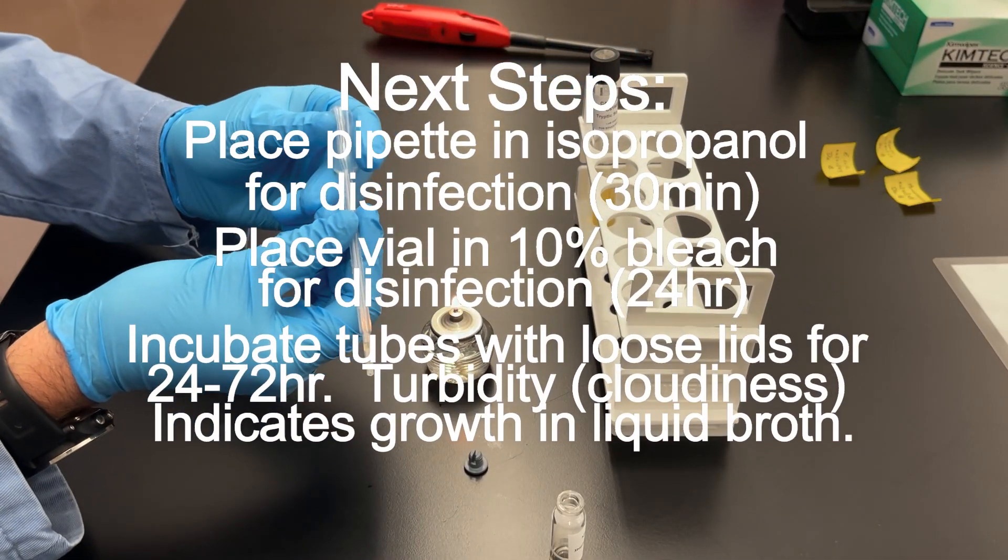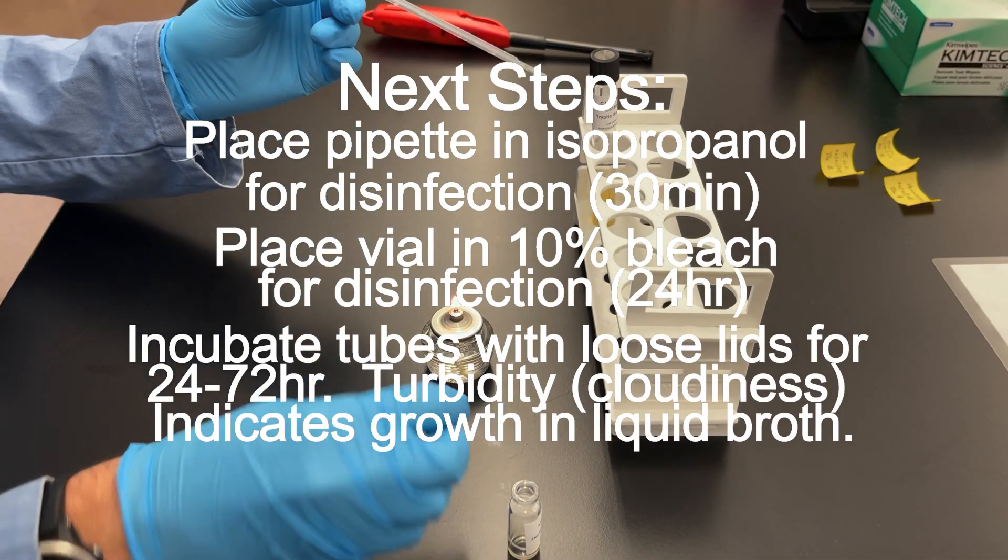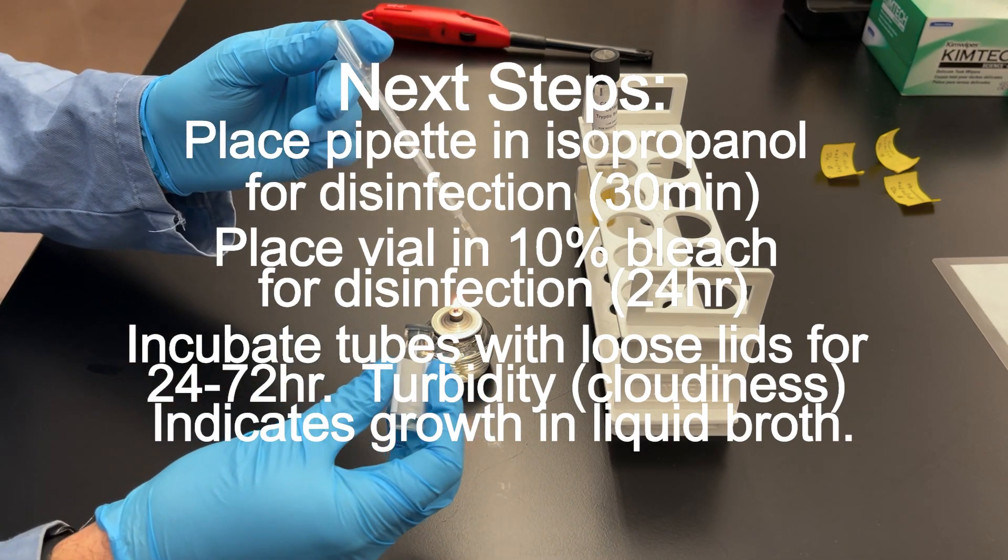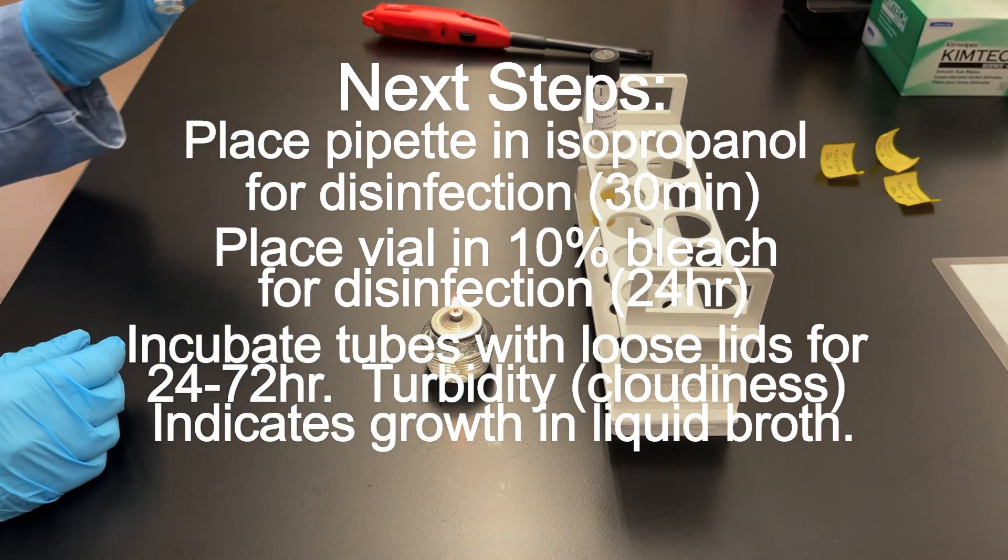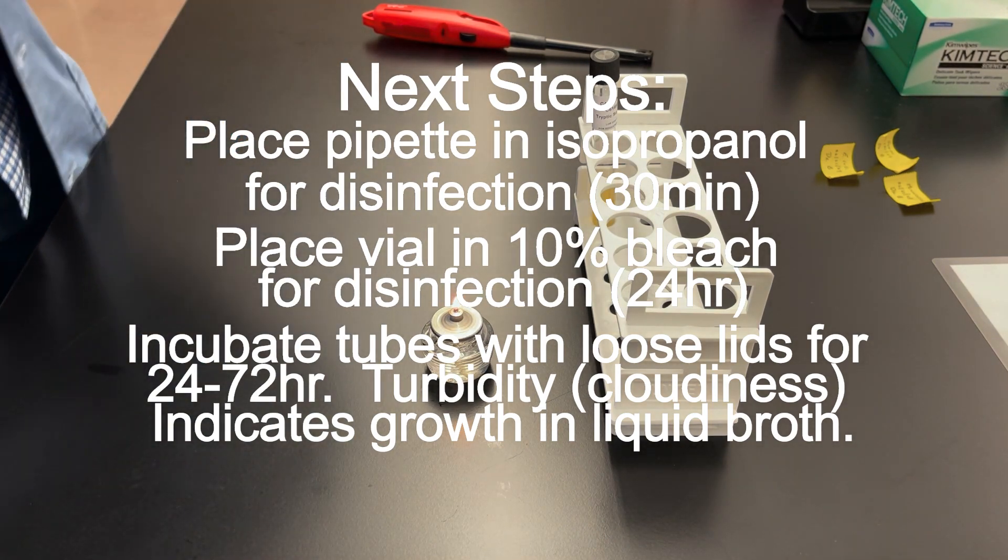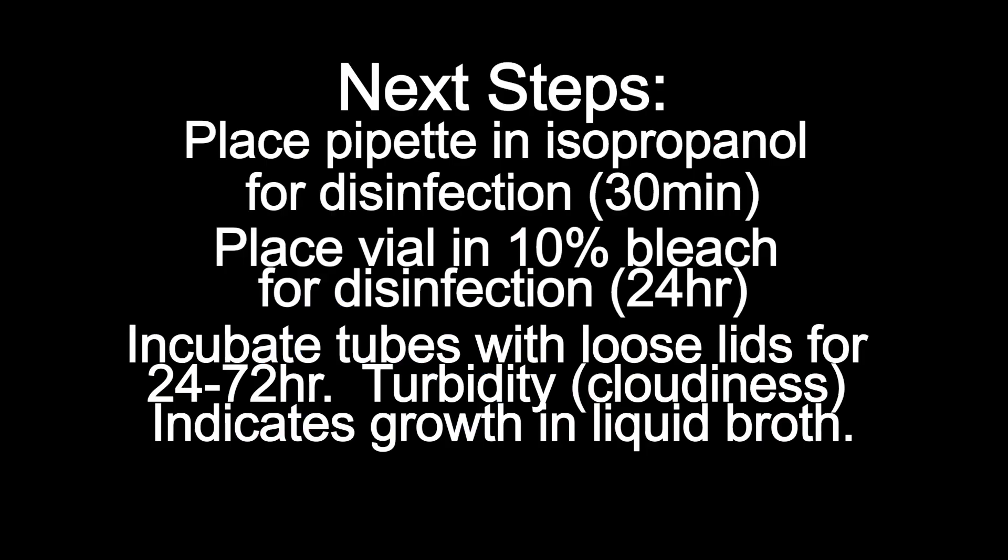Make sure you disinfect the pipette by putting it in the isopropanol for 30 minutes before disposal. The vial that's now empty needs to be disinfected and that goes in 10% bleach for 24 hours. And the tube that you just set up that now has the bacteria growing, it needs to grow for somewhere between 24 and 72 hours with the lids loosened.